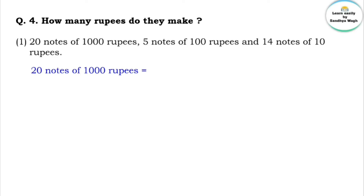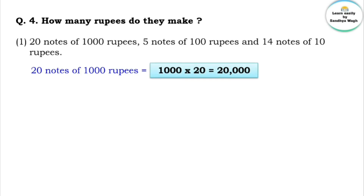For 20 notes of 1,000 rupees, we multiply 1,000 by 20, which gives us 20,000. For 5 notes of 100 rupees, we multiply 100 by 5, which gives us 500.